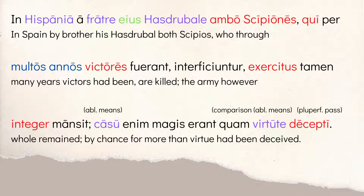Now we shift gears from Italy back to Spain. In Hispania, by his brother Hasdrubal — that's an ablative of agent — something happened to someone. We get the subject: ambo Scipiones, both Scipios. So we're already set up that something happened to the Scipios and it was done by Hasdrubal, who they'd been fighting in Spain.